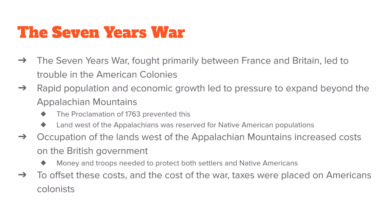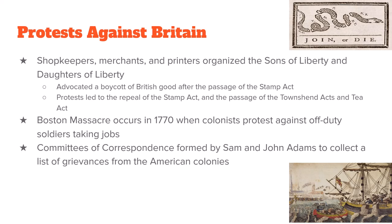The American colonists didn't like the Proclamation of 1763, didn't like being kept out of lands past the Appalachians, and definitely did not like the taxes Britain imposed on them. Protests against Britain took place between 1763 and the early 1770s. Shopkeepers, merchants, and printers organized the Sons of Liberty and Daughters of Liberty. A general boycott against British goods followed the Stamp Act — a stamp required on any paperwork as a tax. The protests and boycott grew so large that the Stamp Act was repealed in 1766, but it was quickly replaced by other taxes such as the Townshend Act and the Tea Act.